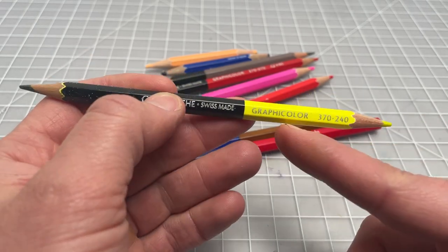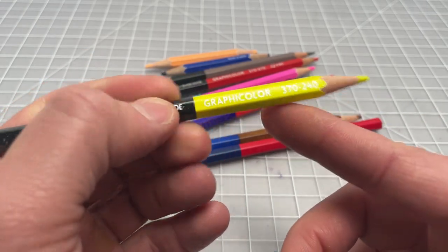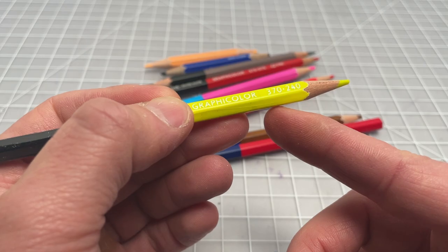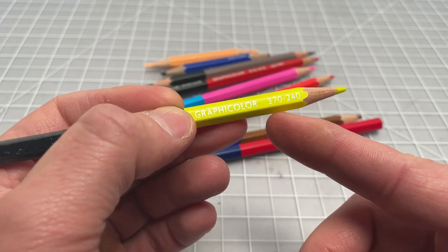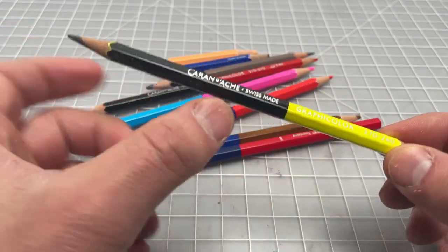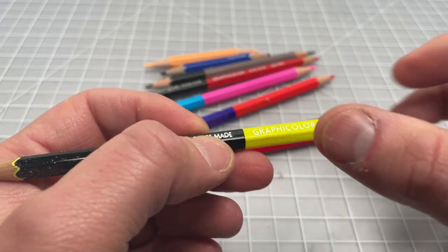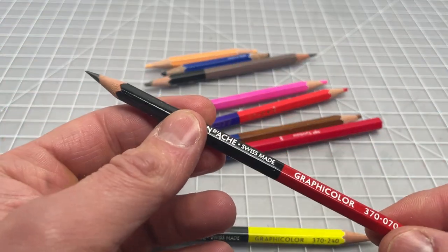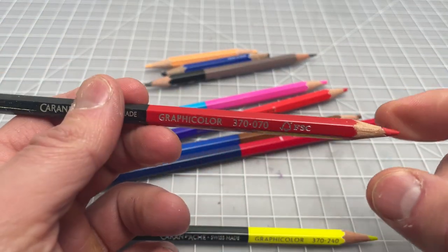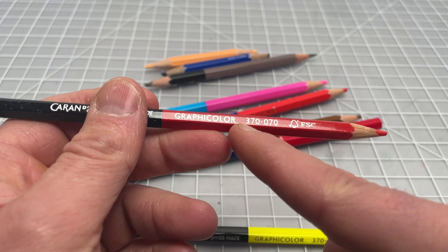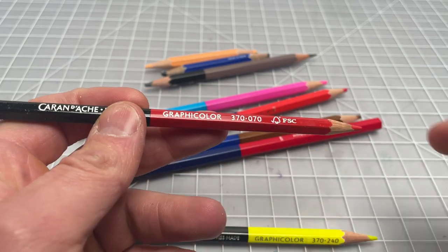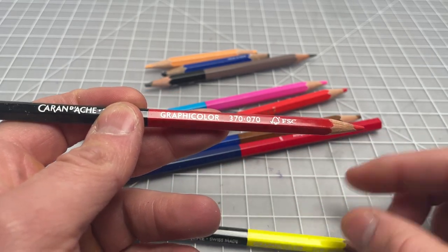First of all, we have the Caran d'Ache. This is called the graphic color. This specific one is the 370-240. And again, black or maybe just like kind of standard pencil and the highlighter. There's another one from Caran d'Ache here, black and red. You see the 370, that's just the pencil color, and then the 070 is the red.